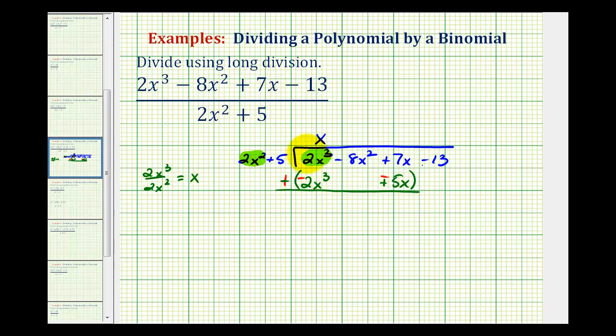And now we'll add 2x³ plus negative 2x³, that's zero. And then 7x plus negative 5x would be 2x. And then we'll bring down the next term which is going to be this term here. So we'll have negative 8x² and this is positive so we can write this as plus.